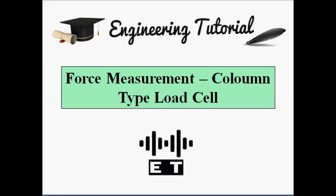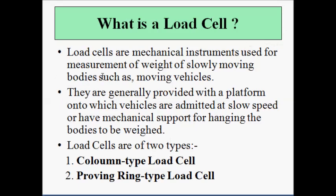Before we discuss the column type load cell, we must first understand the definition or the idea behind a load cell. A load cell is a mechanical instrument which is used for the measurement of slowly moving bodies, such as slowly moving vehicles or any other object. The load cell is provided with a platform onto which the vehicle or body whose weight is to be measured is admitted at slow speed, or it has a mechanical support or a hook from which the object can be hanged to measure its weight.